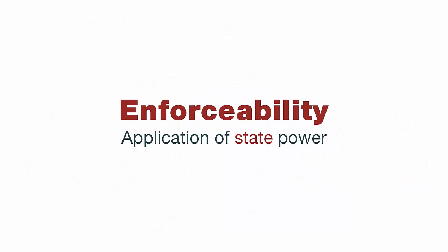Enforceability involves the application of state power to a private agreement. When I arrange to purchase a computer from you and you fail to sell me the computer on time, what a contracting system allows me to do is go to a court and have the court order you to sell me the computer or pay me damages for the failure to do so. So a contracting system provides for what kinds of promises the state will enforce on behalf of private parties.